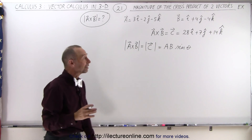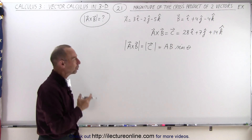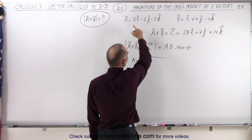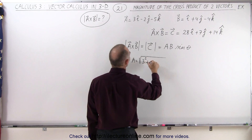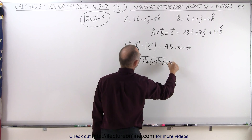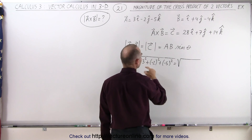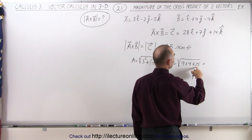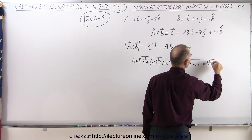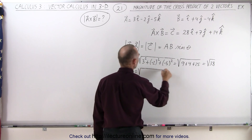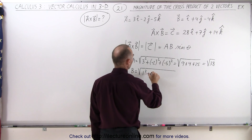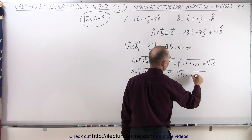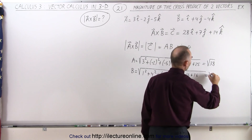So we're going to have to find the magnitude of the two vectors and the angle between them. The magnitude of a is equal to the square root of the sum of the squares of the components: 3 squared plus negative 2 squared plus negative 5 squared, which equals the square root of 9 plus 4 plus 25, giving us the square root of 38. The magnitude of b is equal to the square root of 1 squared plus 4 squared plus negative 4 squared, which equals the square root of 1 plus 16 plus 16, giving us the square root of 33.